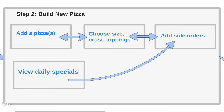Step two is where the user configures their pizza and makes sure it's exactly what they want by choosing the size, the crust, the toppings, side orders, and so on. If they don't want to actually build a pizza, they can view the daily specials and pick one of those.